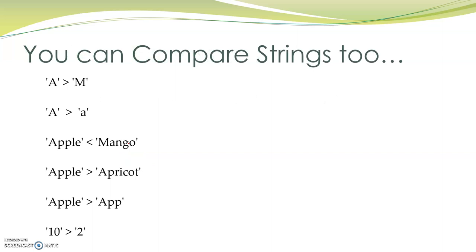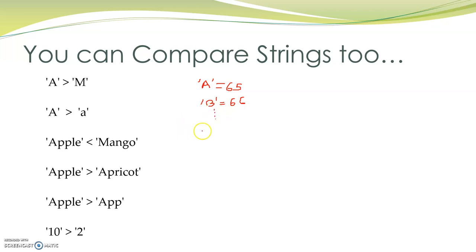Using relational operators, we can compare strings also. Let's take this first example: we are comparing A greater than M. How this is compared depends on the fact that in our computer system, every character is represented by some number using an encoding scheme. Python uses Unicode encoding scheme. Using Unicode, character A is encoded as 65, character B is encoded as 66, and so on. Character M is encoded as 77.